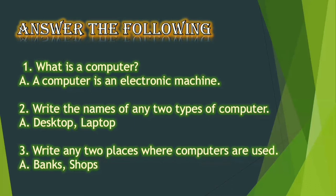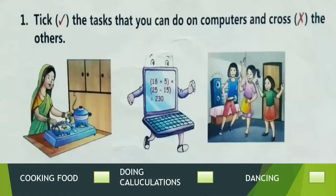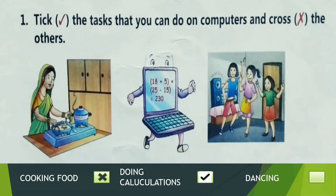Now it's activity time. Let us see the first activity. See these pictures — some tasks are given here. Take the task that you can do on computers and cross the others. First picture: cooking food. Can a computer cook food? No, so put a cross mark. Second picture: doing calculations. Can a computer do calculations? Yes, so put a tick mark. Third one: the children are dancing. Can a computer dance? No, computer cannot dance, so put a cross mark.